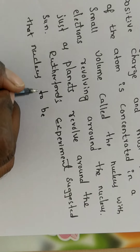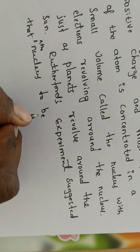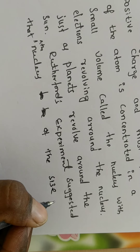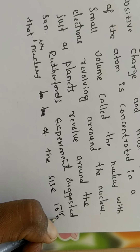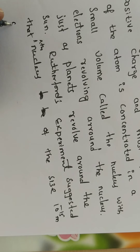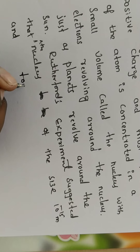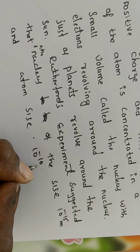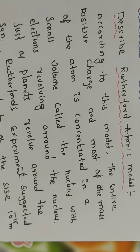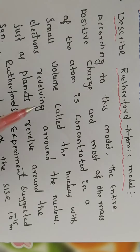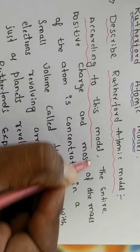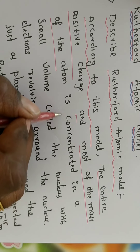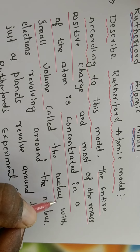The nucleus has a size of 10 to the power of minus 15 meter, and the atom has a size of 10 to the power of minus 10 meter. According to this model, the entire positive charge and most of the mass of the atom is concentrated in a small volume called the nucleus.